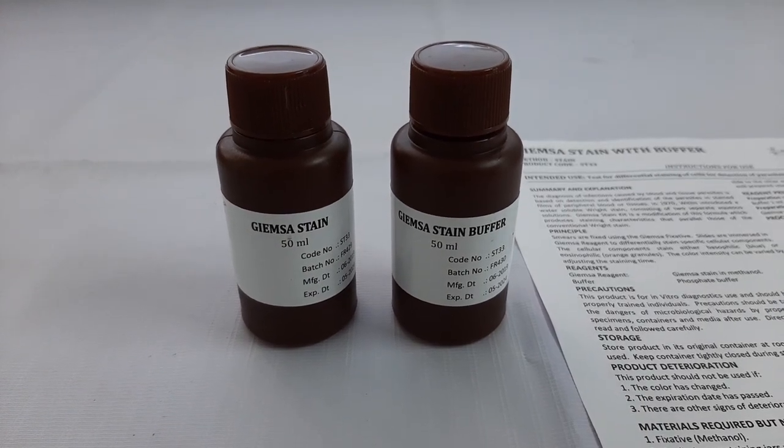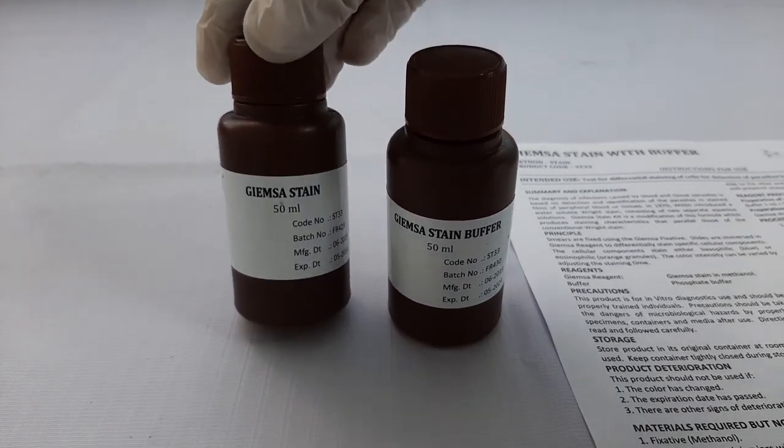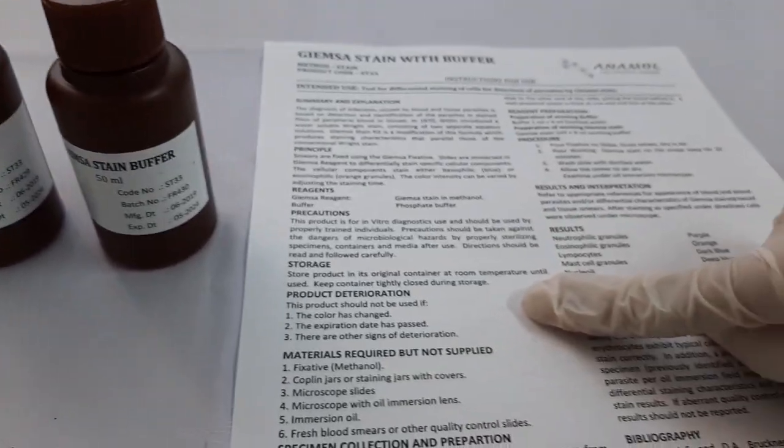First, let's have a look at the kit components. The kit contains one bottle of Giemsa stain, one bottle of Giemsa buffer, and the instructions for use.